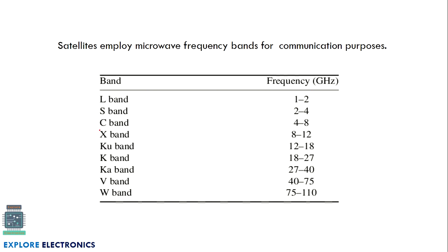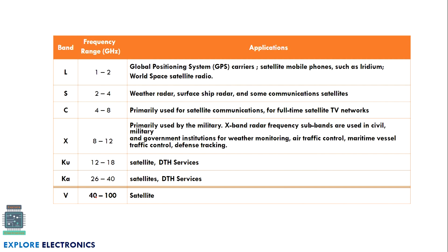Here are the different band representations with respect to frequency. The microwave frequency band starts from 1 gigahertz — that is the L band — and goes up to around 100 gigahertz, which is the W band. The L band is used in GPS carriers, S band in weather radars, C band primarily in satellite communications, and X, KU, KA, and V bands are also used, generally in satellite communication.